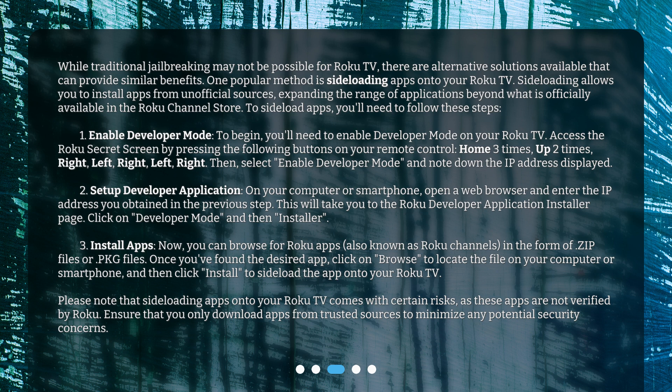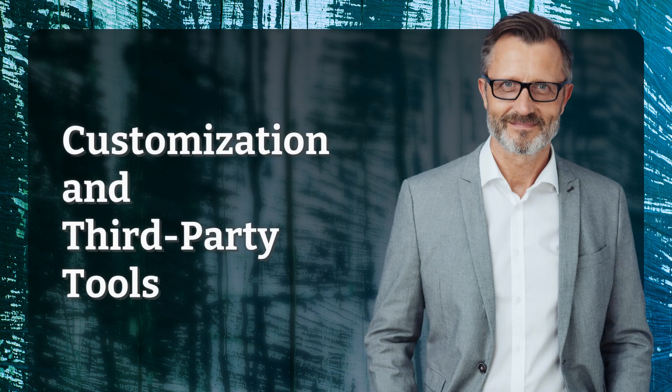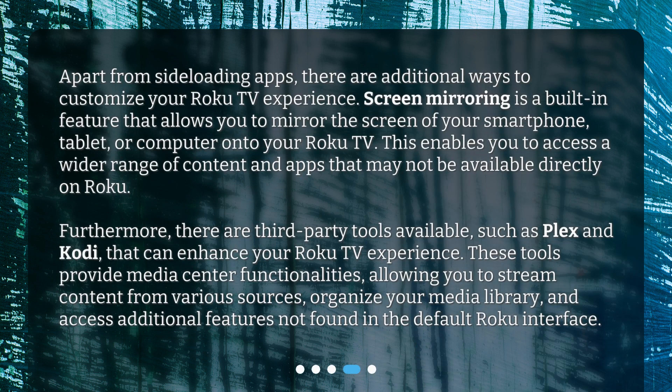Ensure that you only download apps from trusted sources to minimize any potential security concerns. Apart from sideloading apps, there are additional ways to customize your Roku TV experience. Screen mirroring is a built-in feature that allows you to mirror the screen of your smartphone, tablet, or computer onto your Roku TV, enabling you to access a wider range of content and apps that may not be available directly on Roku.